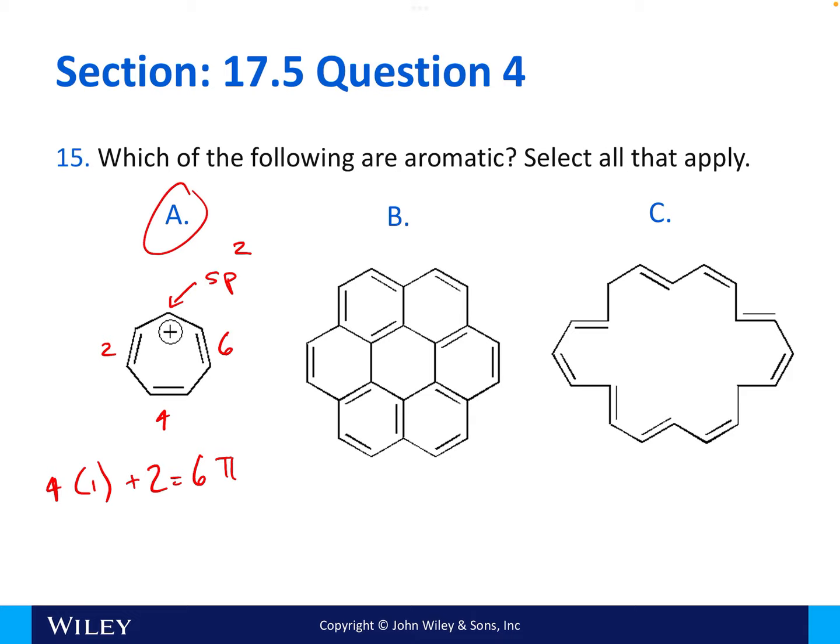If we start counting our electrons in B, we have two, four, six, eight, ten, twelve, fourteen, sixteen, eighteen, twenty, twenty-two, and then twenty-four. And, of course, four times five plus two gives us twenty-two. Four times six plus two gives us twenty-six. And so, nothing that we can do to our n as a whole number will allow B to be an aromatic structure. And so, B is not going to be aromatic.